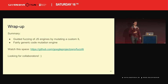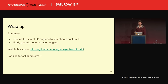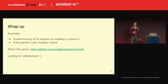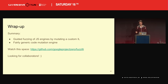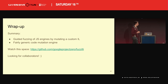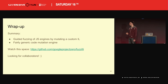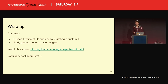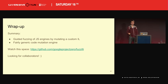So to summarize: a guided fuzzing approach by mutating a custom intermediate language. Right now this is a fairly generic code mutation engine, so it would probably also work for other languages — at least dynamically typed ones. Watch this space for the open source release. I'm definitely looking for collaborators — if anyone is interested in running this or trying this, please ping me, write me an email, or ping me on Twitter. Thanks for your attention, and I'm open for questions.